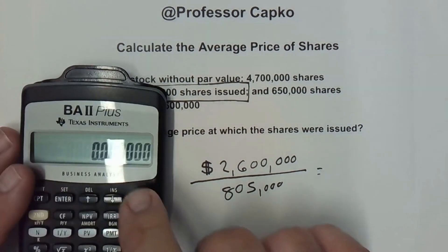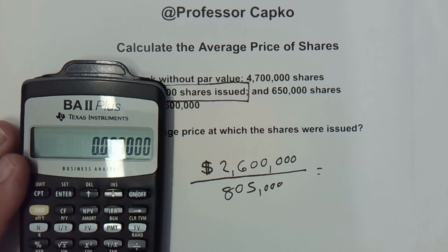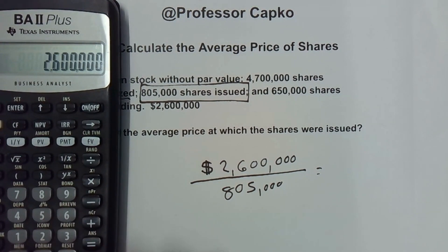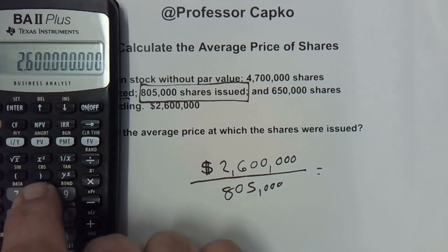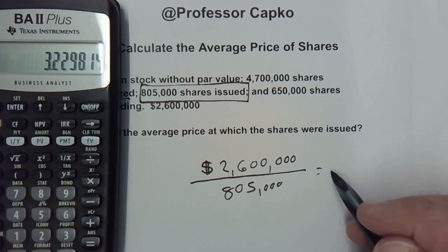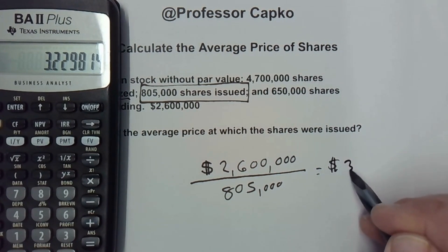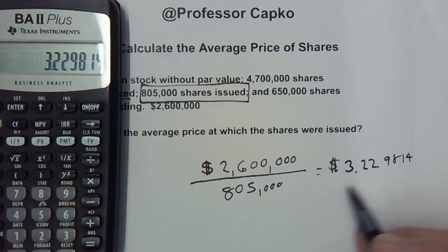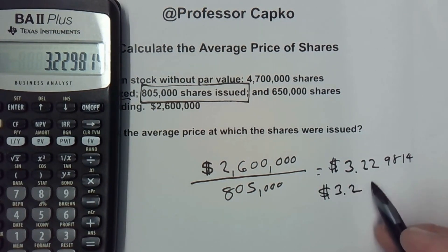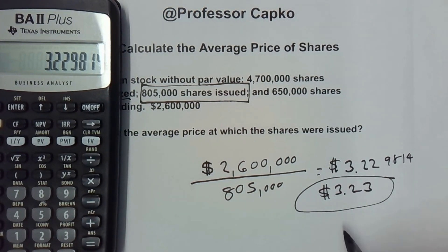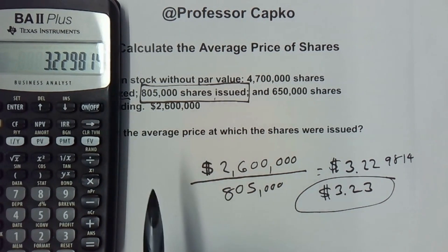So it becomes just a simple division problem. We have the $2,600,000 and we're going to divide it by the 805,000 shares that were issued, because they were initially issued. That gives us $3.229814, which we round to $3.23. That is the average price per share at which they were issued.